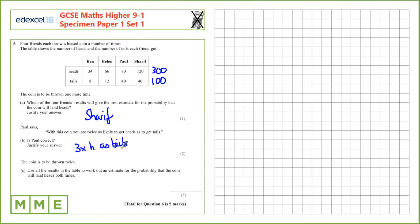The coin is to be thrown twice. Use all the results in the table to work out an estimate for the probability that the coin will land on heads both times.